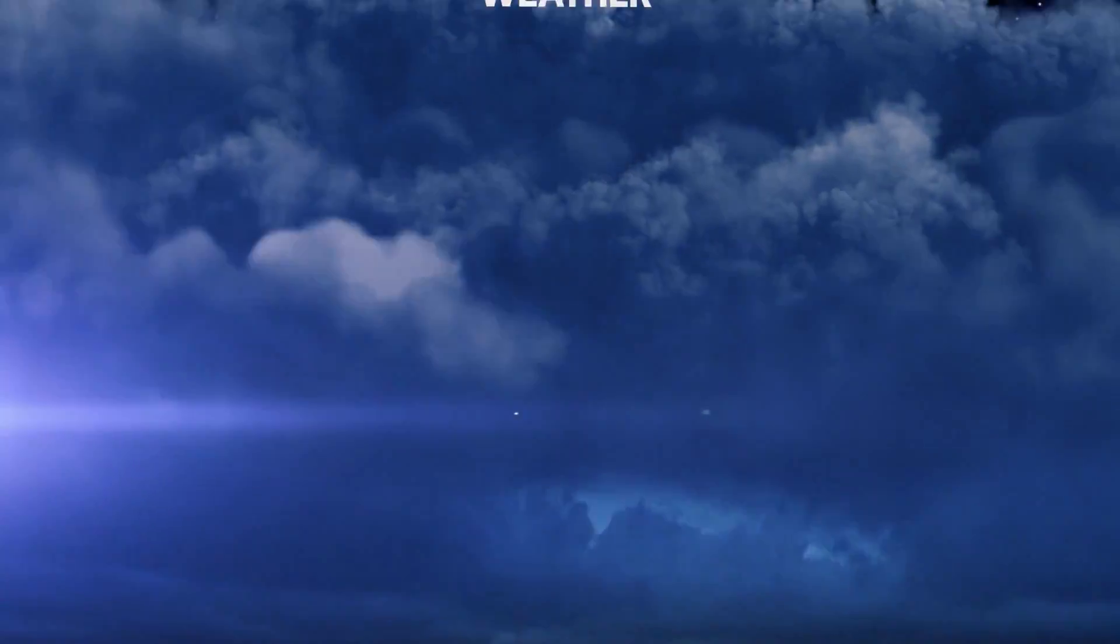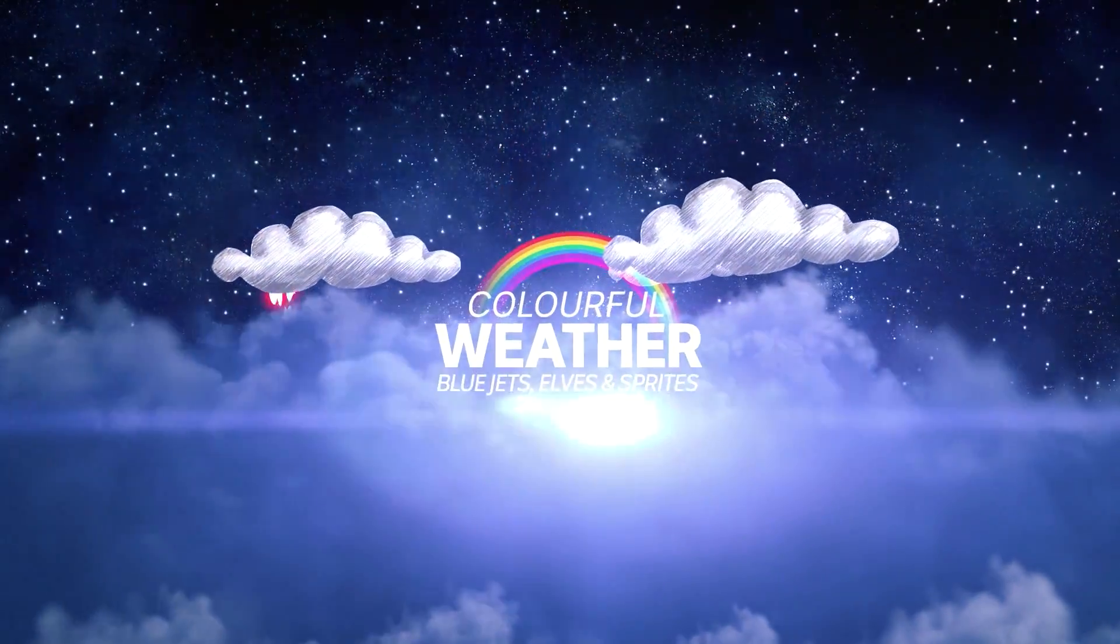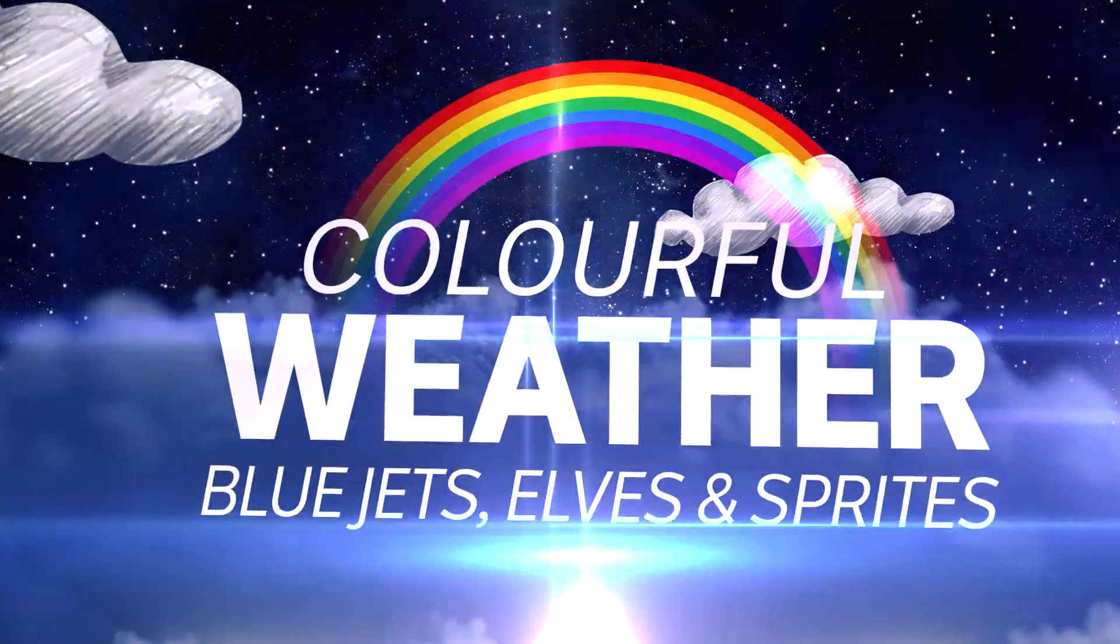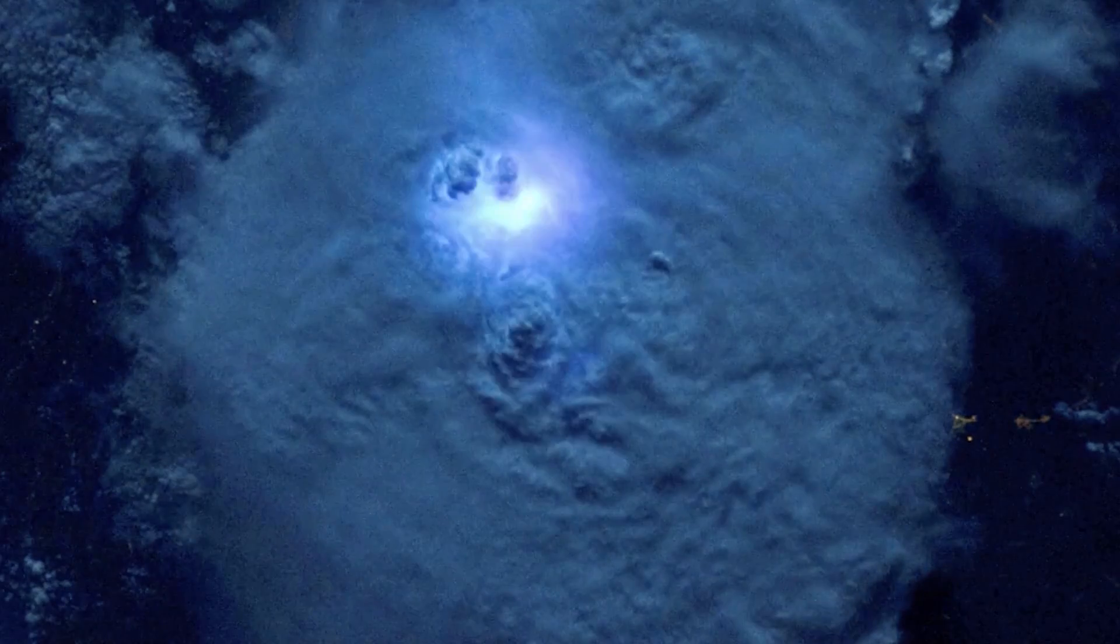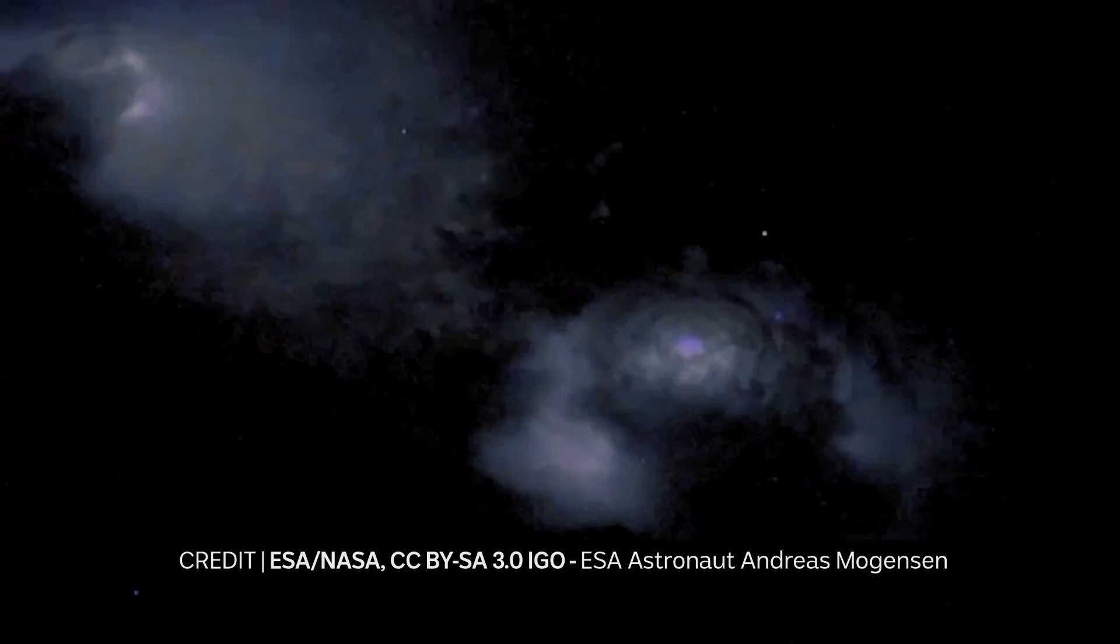Did you know that storm clouds have a whole other world of flashing lights just above them? Above the storms, red jellyfish shaped lights, blue streaks and huge donut shaped halos flash.